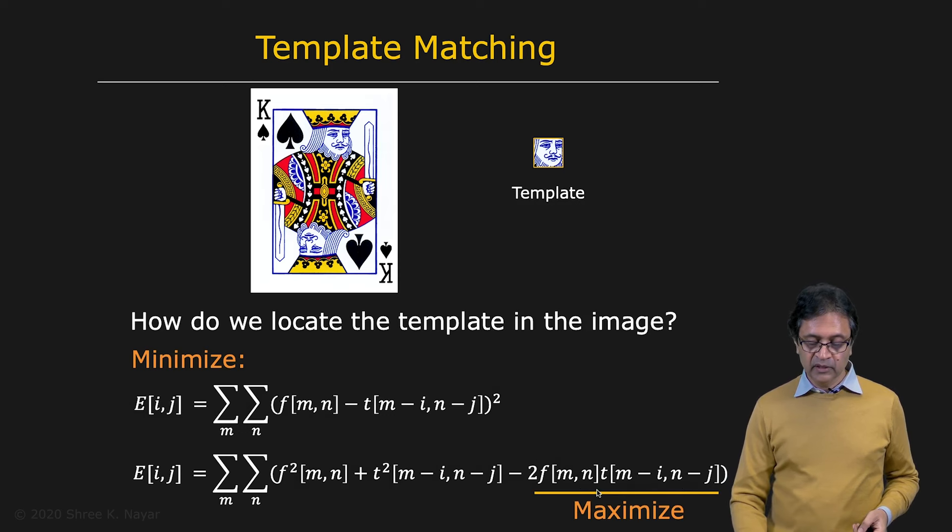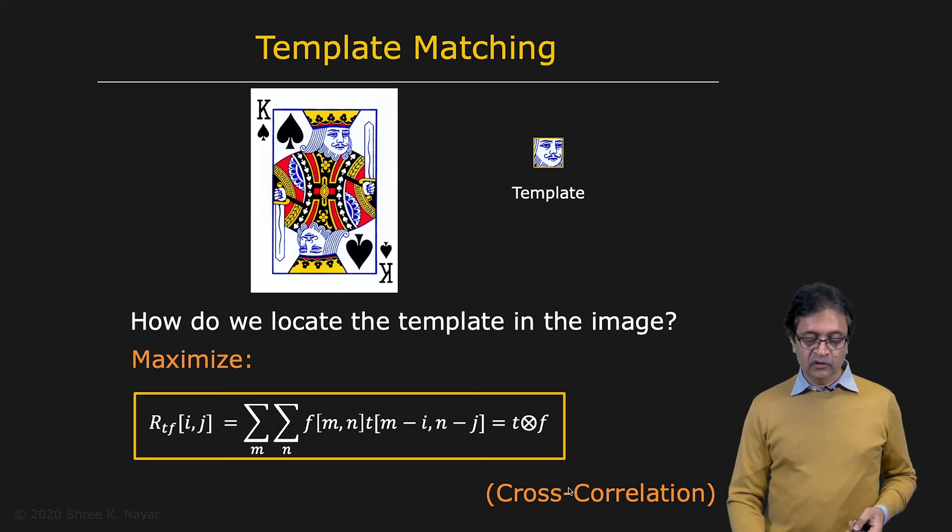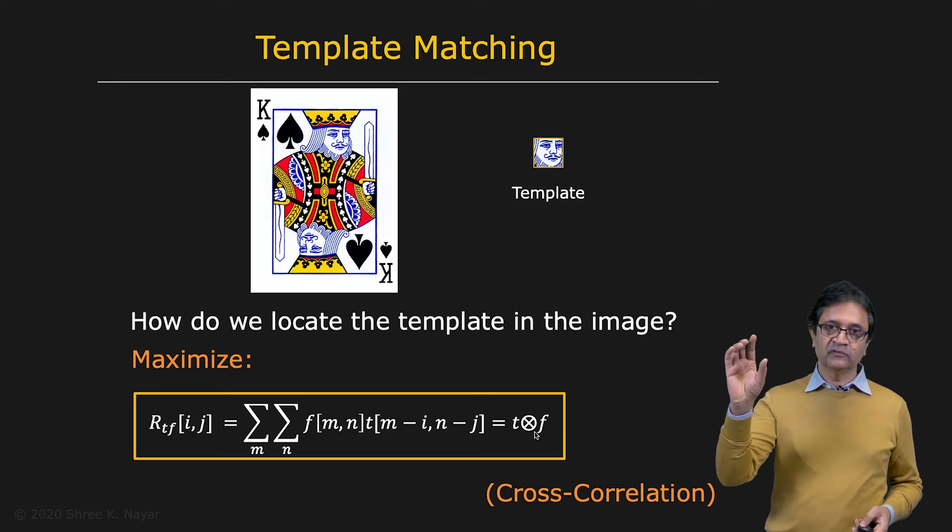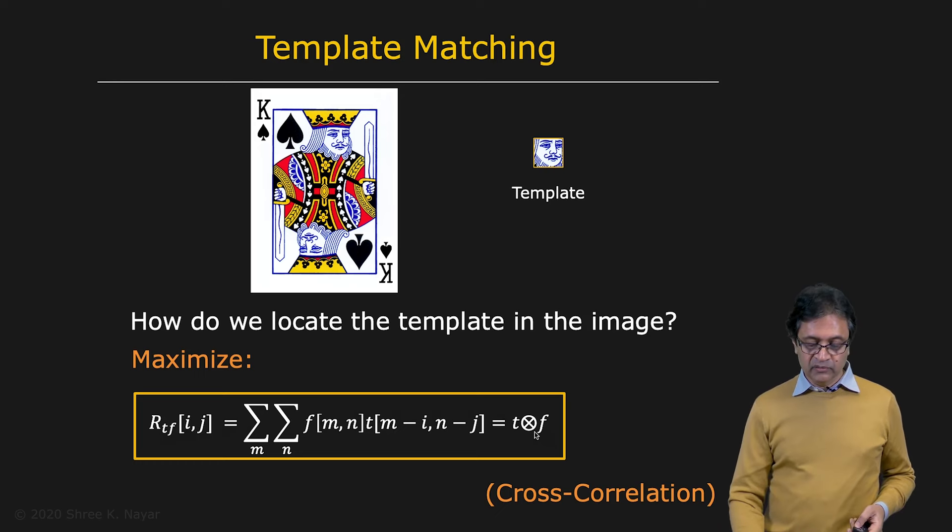So let's take a look at this term. This term is called the cross correlation between f and t. And that's denoted as RTF. The symbol for convolution is an asterisk. Symbol for cross correlation is this right here.